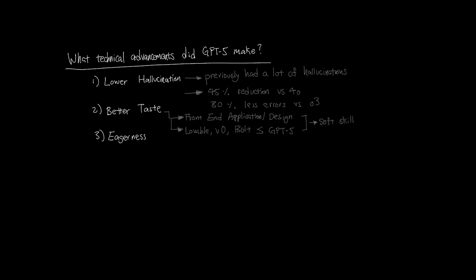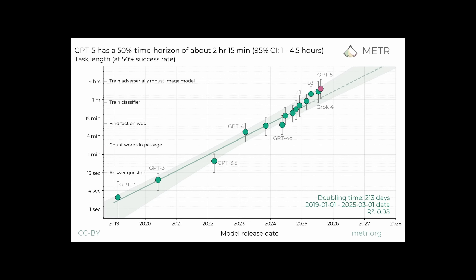And finally, it's eagerness, which is another soft skill that's kind of hard to measure, but the closest one being METR's benchmark that measures the AI's capability of completing long, complex tasks. GPT-5 scored the highest in this benchmark, and as agentic coding becomes the norm, this is certainly a good trend that GPT-5 is charting.